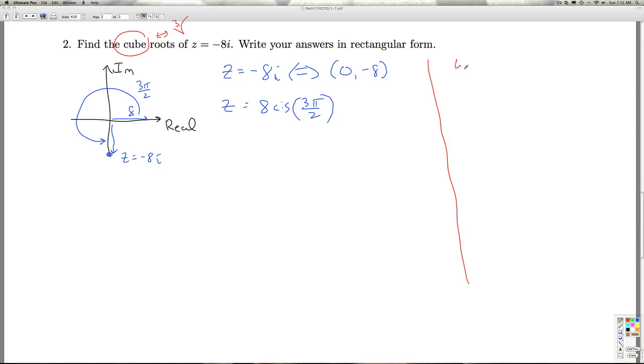In De Moivre's theorem, if you're taking a complex number, I'm just going to call it W to kind of distinguish it from Z. If you're going to take this thing to the third power, De Moivre's theorem said you take the argument to the third power and then you multiply the angle by 3.